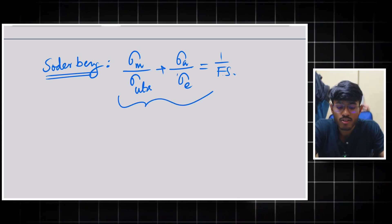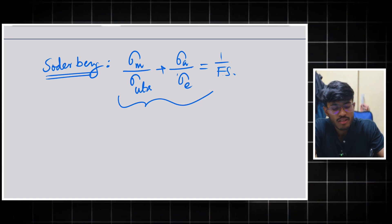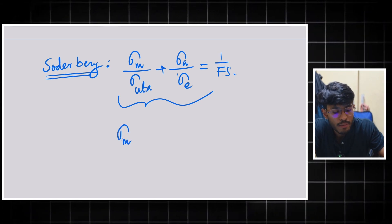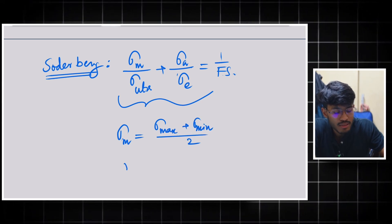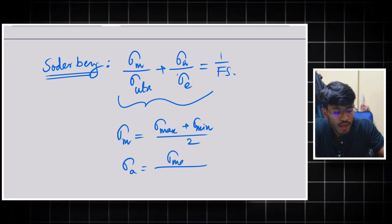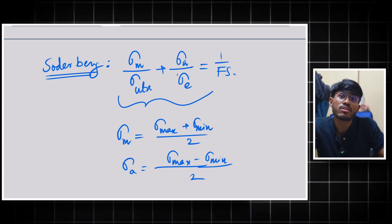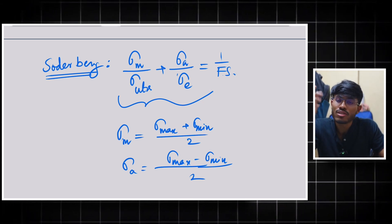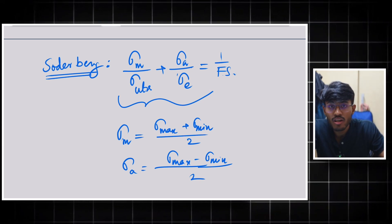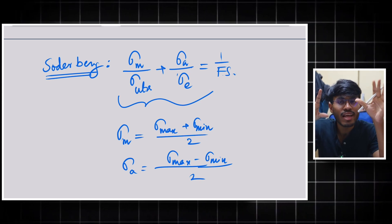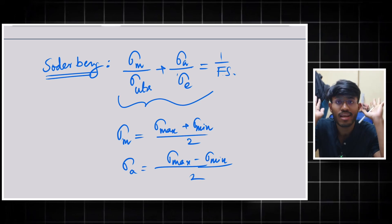Once you have σ_mean and σ_amplitude, you can put values into your chosen criterion. They may also ask you to choose a material — for example, why steel and not copper, aluminium, or cast iron? You have to think like an engineer and justify your choice based on strength, ductility, availability, and economics.